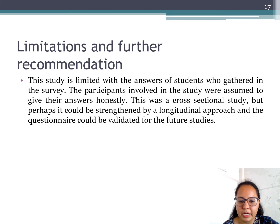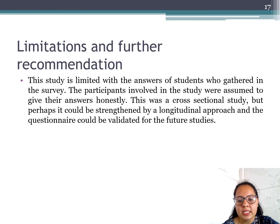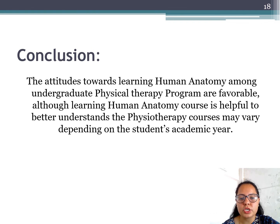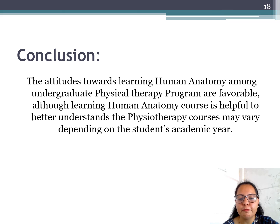Limitation and further recommendation: This study is limited to the answers of students gathered in the survey. Participants were assumed to have answered honestly. This was a cross-sectional study, but it could be strengthened by a longitudinal approach and the questionnaire could be validated for further studies. Conclusion: The attitudes towards learning human anatomy among undergraduate physical therapy students are favorable, and learning human anatomy is helpful for better understanding physiotherapy courses, which may vary depending upon the student's academic year.